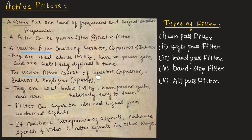The active filter consists of resistor, capacitor, and inductor, along with an amplifier which is an active component. That is why these filters are known as active filters. We can say passive filter consists of only passive components and active filter consists of passive components along with an active component. Generally, we will be using an op-amp as an amplifier. These active filters are used below 1 MHz, they have power gain, and they are relatively easy to tune.